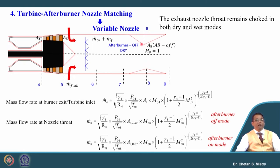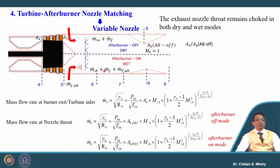We will have a throat section where the Mach number is equal to 1. Section 8 represents the throat where Mach number is 1. When the afterburner is off, the area ratio is given by A9 by A8. If we consider the afterburner under operation — the wet condition — the amount of gas coming out from the nozzle will be ṁ_∞ plus ṁ_f plus the amount of fuel added in the afterburner. Under that condition also, at the throat the Mach number equals 1.